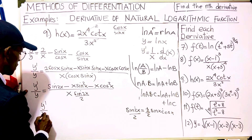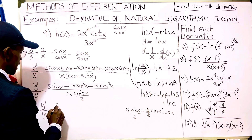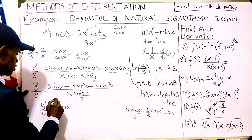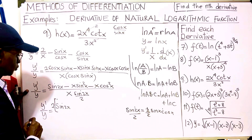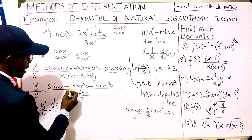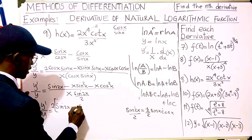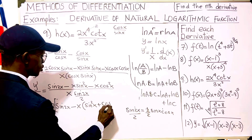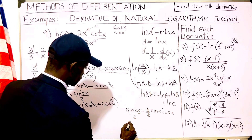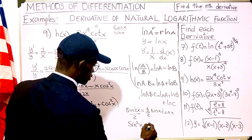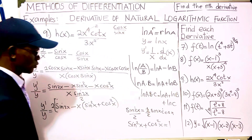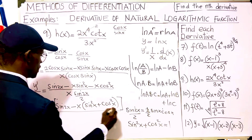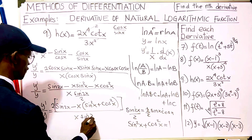So y prime over y simplifies to [sin(2x) minus x] divided by x·sin(2x). Cross-multiplying, we get y prime equals 2y times [sin(2x) minus x] over x·sin(2x), where the 2 comes into the numerator.